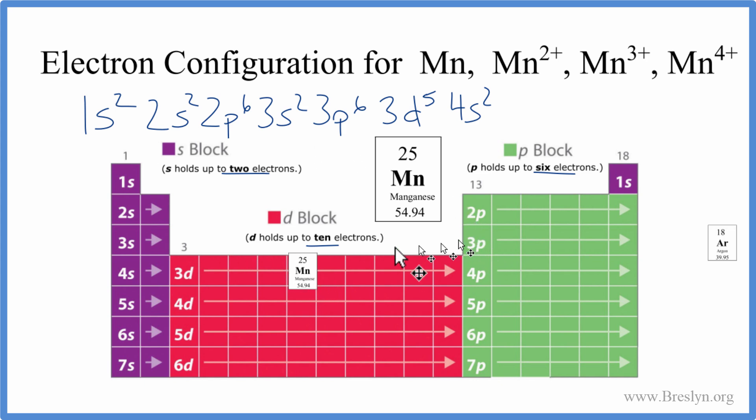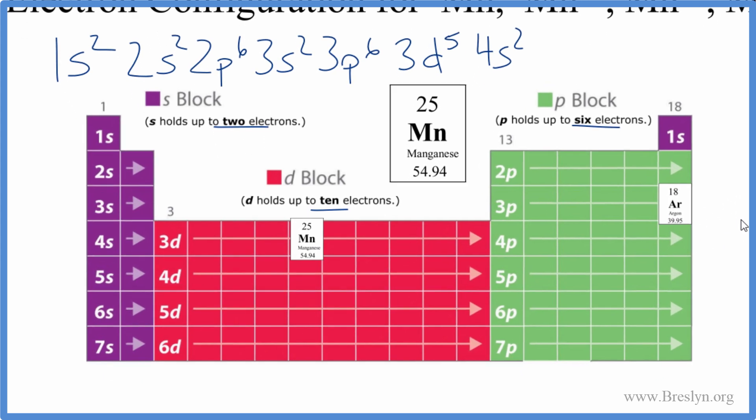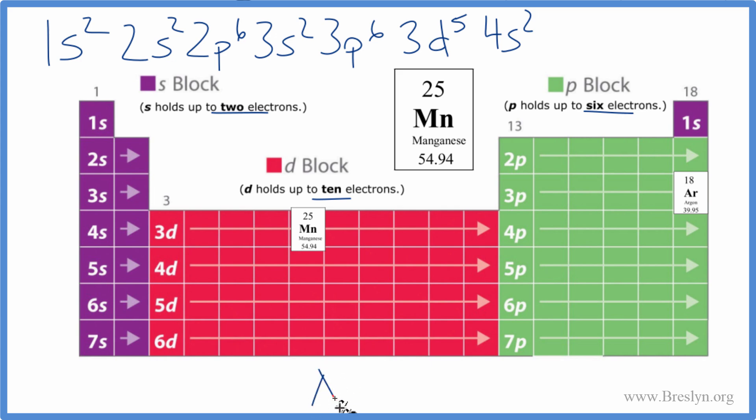So to write the condensed notation, we go back to the noble gas that's before manganese here. So that's argon right here. We then write in brackets [Ar], and then we write what comes after argon. We have the 4s2 and then the 3d5. We said we were going to put the 4s2 after the 3d5, so let's do that. Now this is the condensed notation for just the neutral atom, manganese.